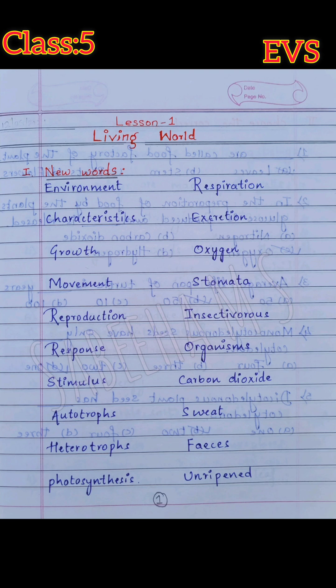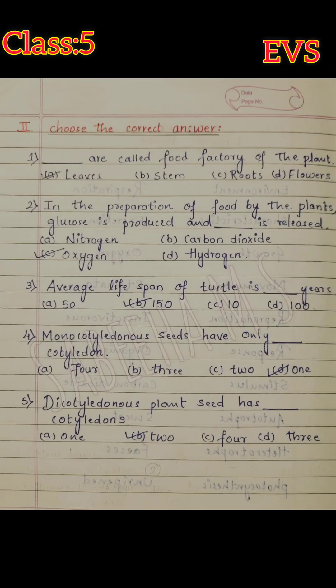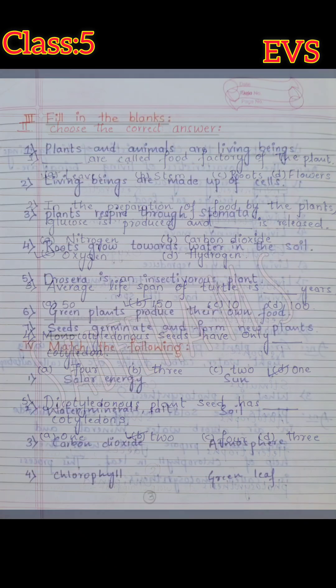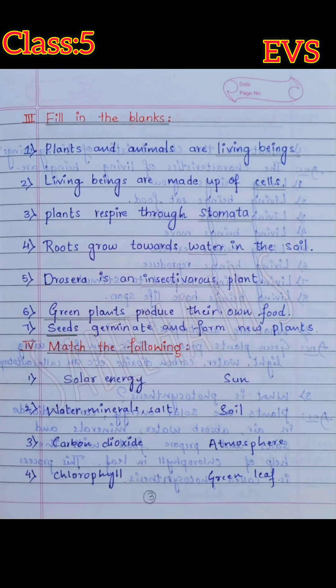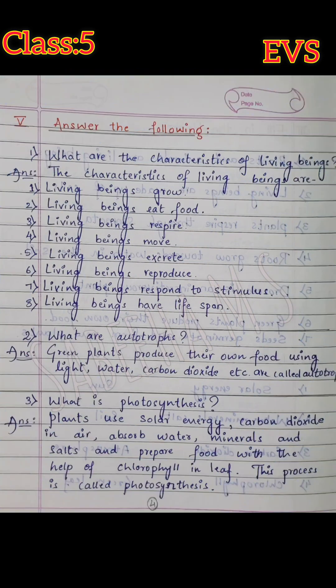So children, here I have given some of the in-between questions to you from this lesson. The first main, you will get the new words. The second main, you will get the choose the correct answer, that is nothing but the MCQ. Then fill in the blanks, match the following. And here in the 5th main, you will get the answer the following.